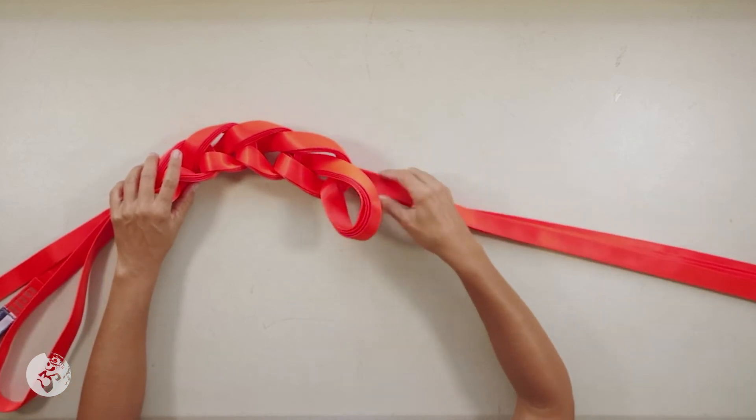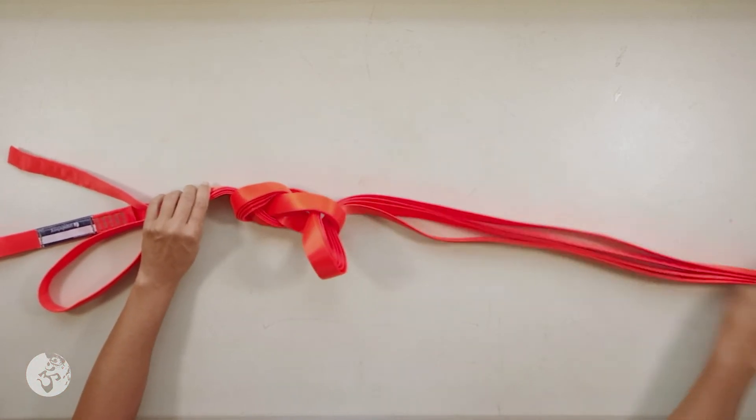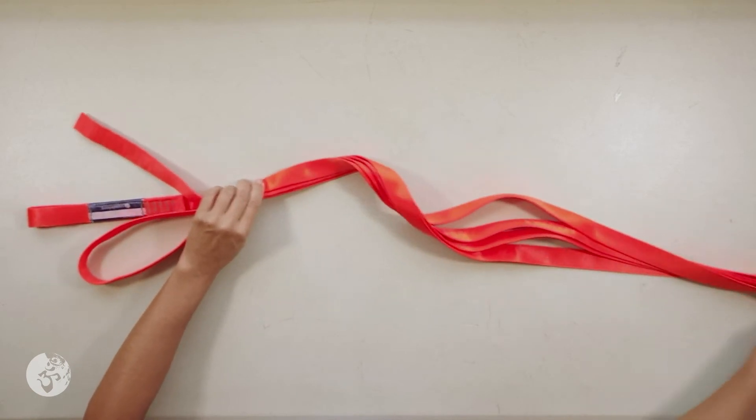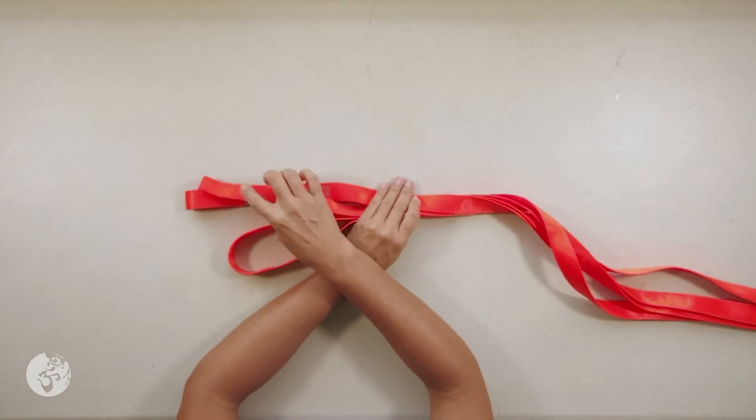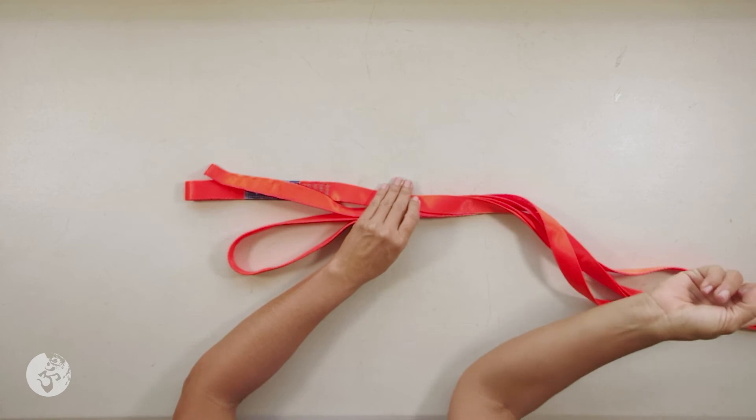The knots are going to come undone on their own. And notice that I started my daisy chain on this side of the line, on the loop side rather than in the middle of the line.